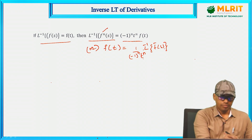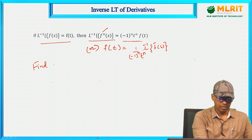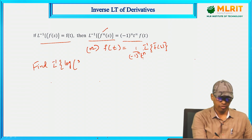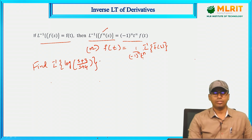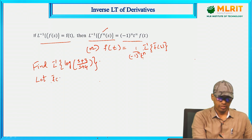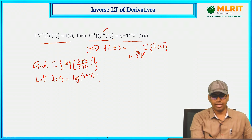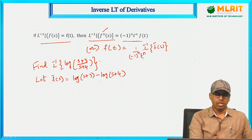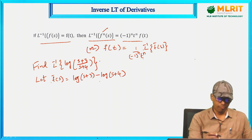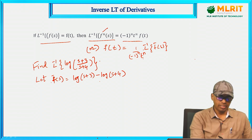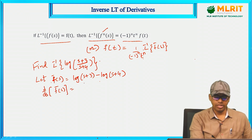Let us see one problem on it. Find L inverse of log((s+3)/(s+4)). First let us identify f̄(s). We take f̄(s) = log((s+3)/(s+4)), and since log(a/b) = log a − log b, this becomes log(s+3) − log(s+4). Now let us differentiate: d/ds of f̄(s) gives 1/(s+3) − 1/(s+4).